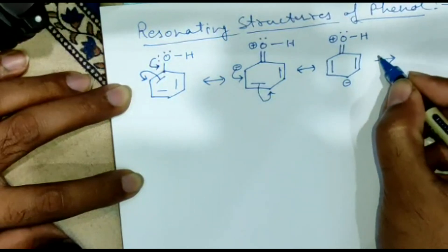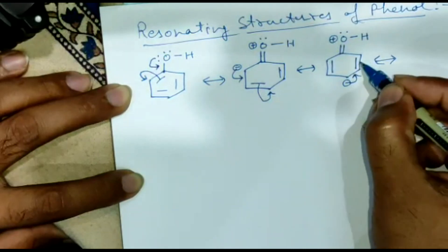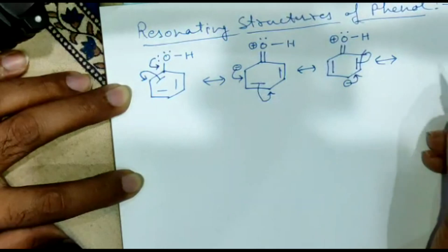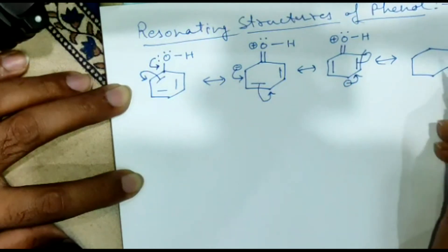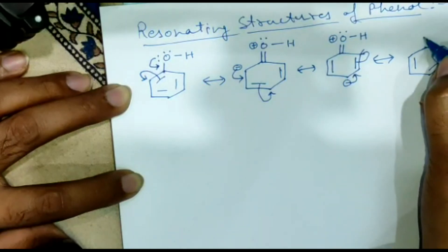Now in the next structure, this charge gets inside and the electrons of this double bond move to the next ortho position. So we can draw the next resonating structure for this phenol like this.